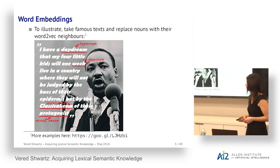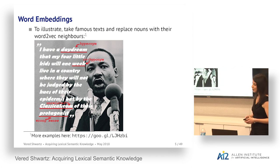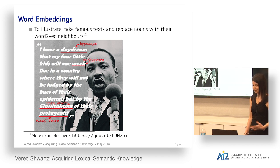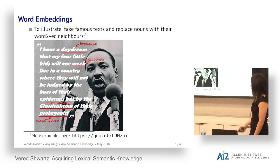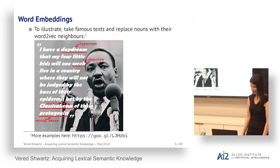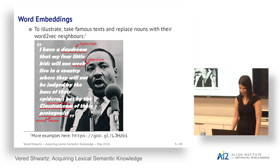Daydream is a hyponym of dream — a specific type of dream, not the original intention. Week is a co-hyponym of day, sharing a mutual hypernym and being mutually exclusive. Classical.com is unrelated to the original word 'content,' and protagonist is a valid synonym of 'character' but only in the book sense. This illustrates that word embeddings are not perfect — we need to do better. More examples and code are available at the URL shown.